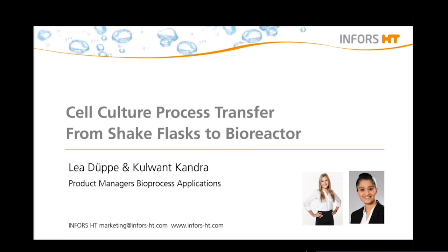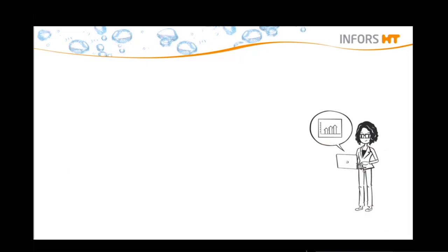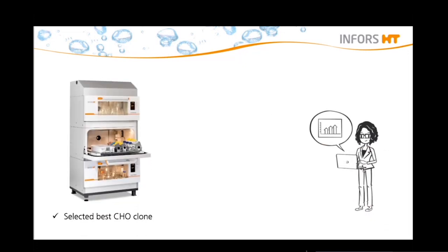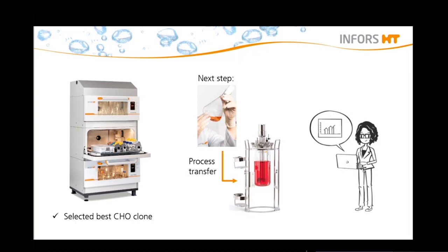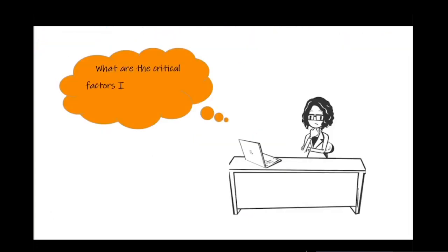So hello Laura, nice to meet you. Hi Lea, it's nice meeting you too. So how can I help you Laura? I would like to give you some background knowledge of my experiments first. I have successfully screened some CHO cells in the incubation shaker and I've found the best clone. The next step is for me to take this clone and scale it up to a bioreactor. I'm a bit overwhelmed by the step of process transfer because I've never worked with bioreactors before, and I'm afraid that my cells might not survive the shear stress in the bioreactor. What are the critical factors I need to consider during process transfer?